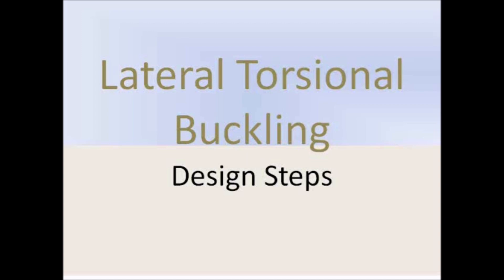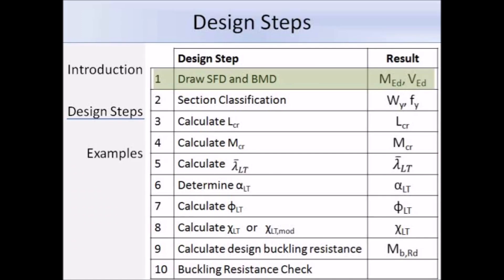In this next section of the lecture on lateral torsional buckling, I'm going to go through the design steps of how to get the design buckling resistance moment. Rather than use a top-down approach, I've decided to arrange the steps in the order you're most likely to carry them out by hand. This is the table of 10 steps, and hopefully by breaking it up into smaller sections, you'll be able to follow the process quite easily.